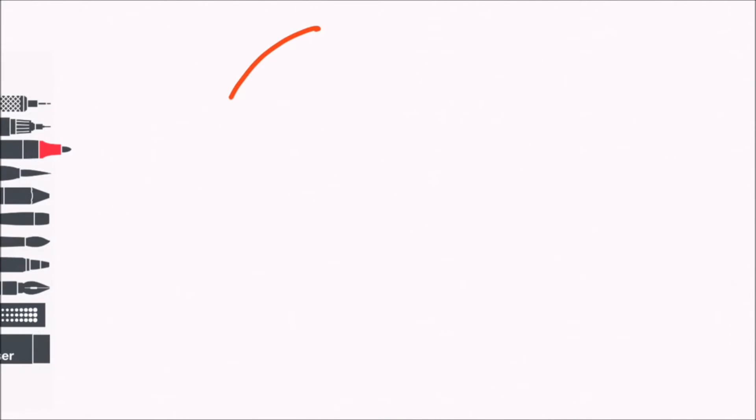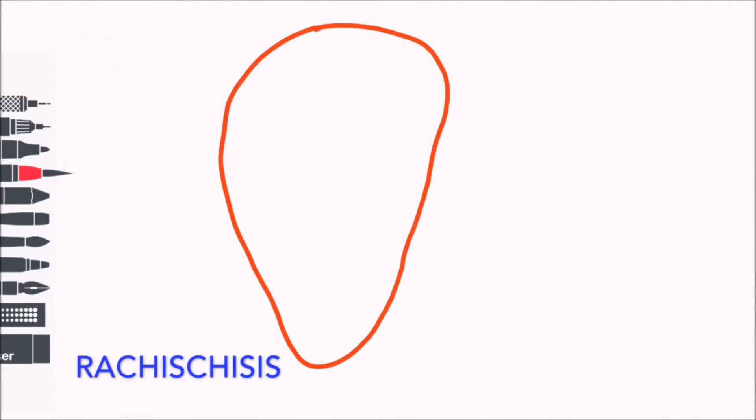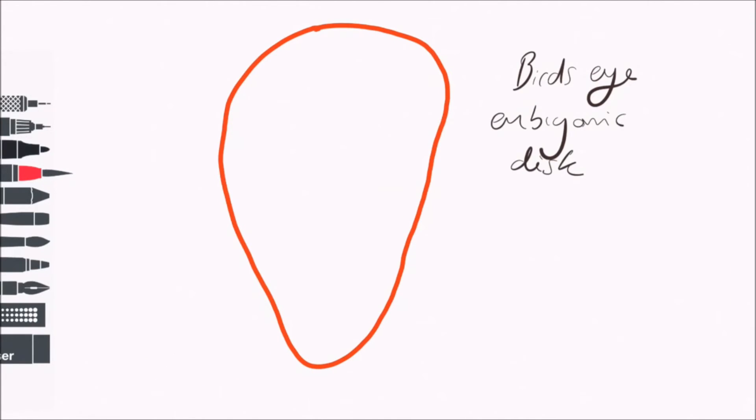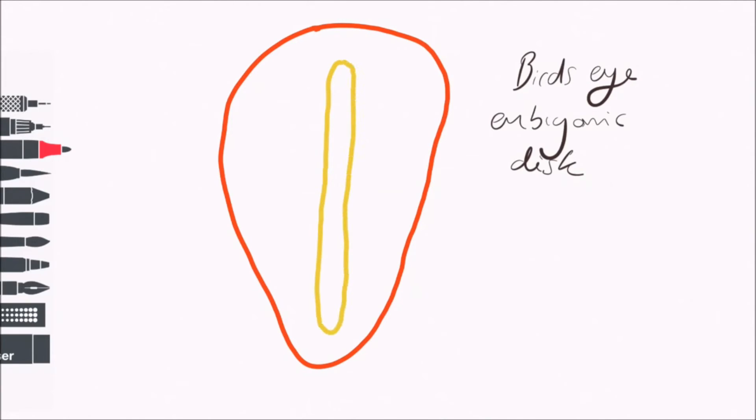Finally, I'd like to mention Rachischisis. If we think back to the previous video where I talked about the neural tube, I mentioned that it forms from the closure of the neural groove.